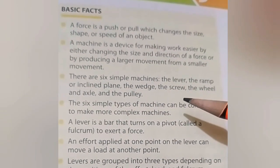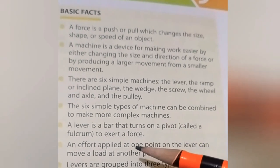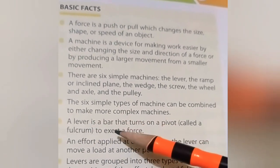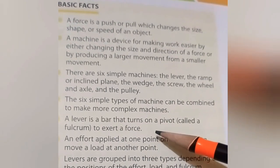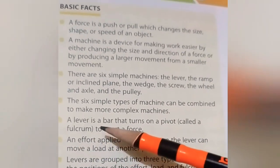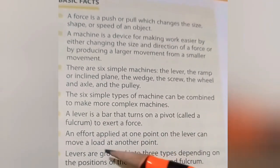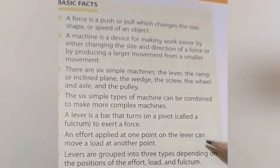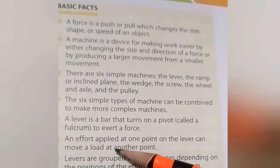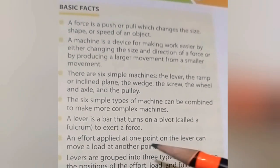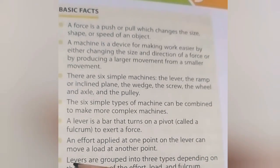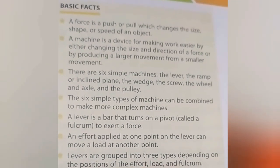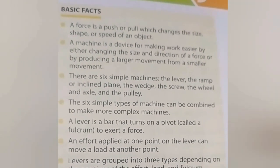Those were the four basic facts studied in lecture number one. In this lecture, we are going to study levers. A lever is a bar that turns on a pivot called a fulcrum to exert a force. An effort applied at one point on the lever can move a load at another point. Levers are grouped into three types depending on the position of the effort, load, and fulcrum.